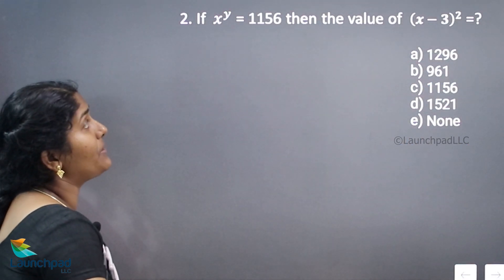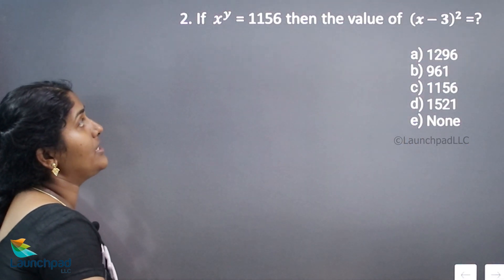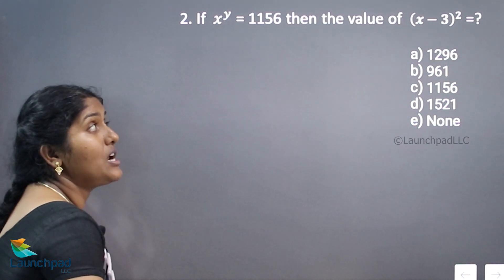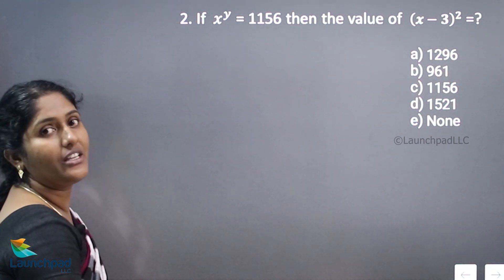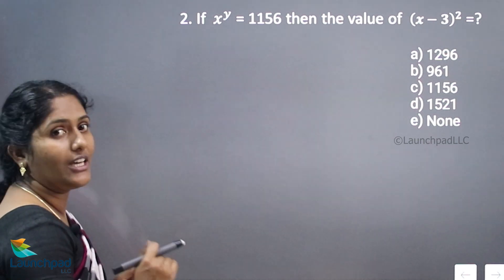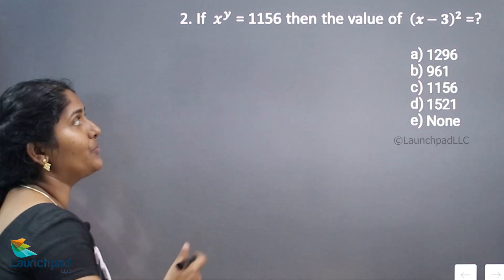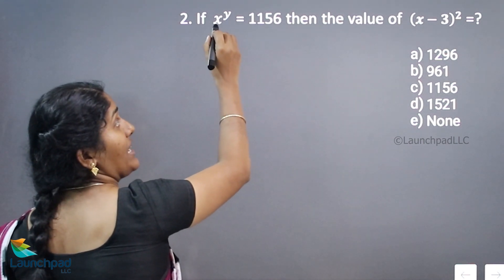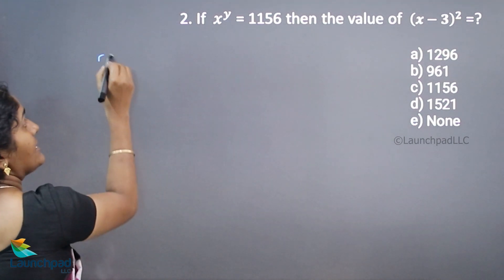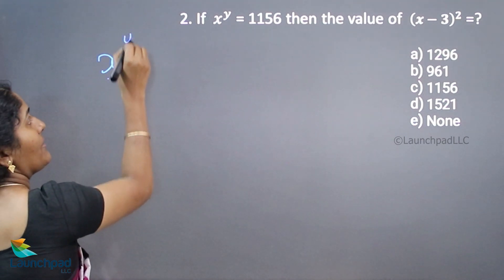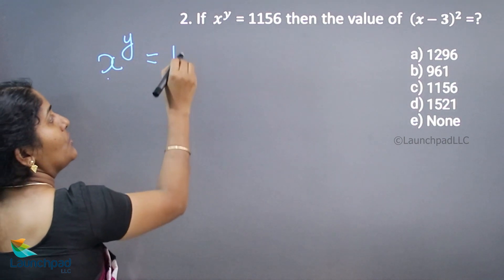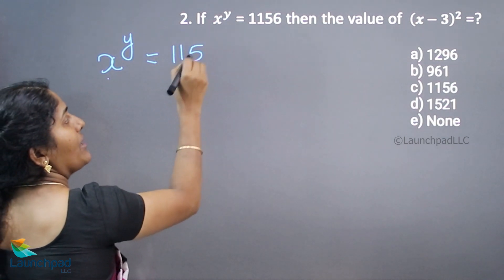If x to the power of y is equal to 1156, then the value of x minus 3, the whole square, is equal to what? Here we want to find out the base value x and also the power value y.